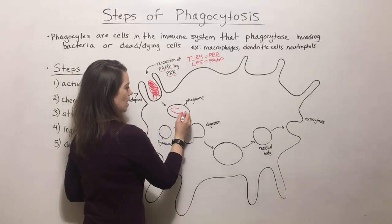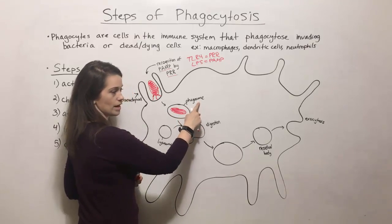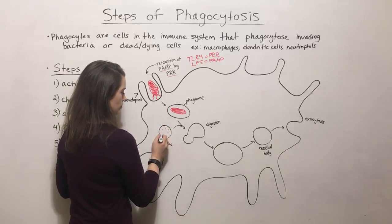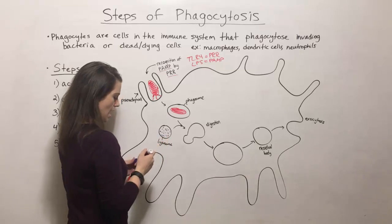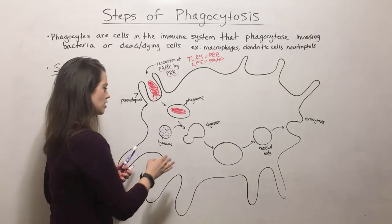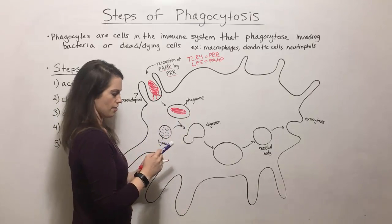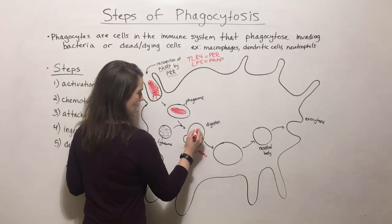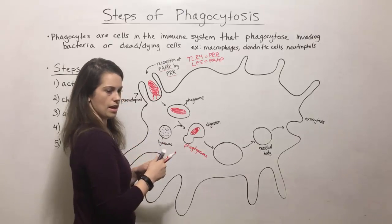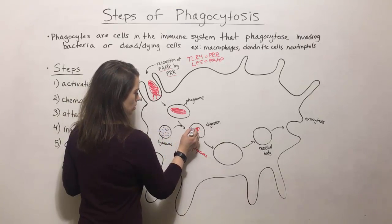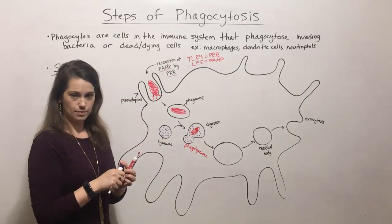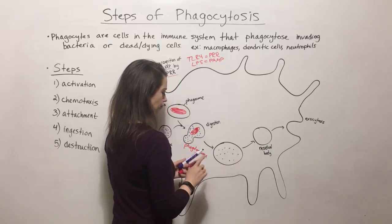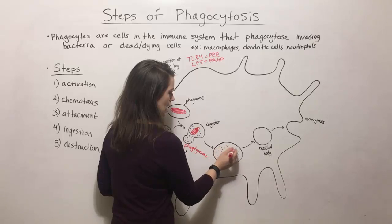The bacterium is then brought into the cell in a membrane-bound vesicle known as a phagosome. The phagosome will then merge with an organelle called a lysosome. The lysosome is full of digestive enzymes, and when the lysosome and phagosome merge they create a phagolysosome. The bacterium inside is then exposed to all of these digestive enzymes, which break it down.